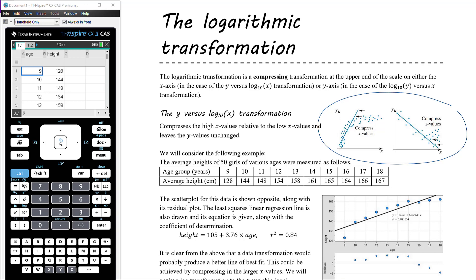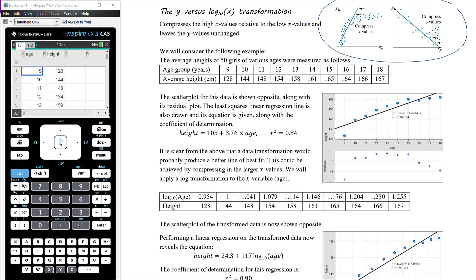The process is identical to the square transformation — instead of squaring x or y values, we take log base 10 of x or y values and plot those. In this example, the average heights of 50 girls of various ages were measured. The scatter plot with the least squares regression line and coefficient of determination is shown. It's clear from the scatter plot that it is a non-linear plot, with a curving pattern better fit by a curve than a straight line.